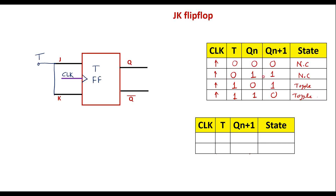This truth table can also be represented in short form considering the positive edges of the clock. When T is 0, Qn+1 is the same as Qn — no change. When T is 1, in both cases, Qn+1 is the complement of Qn, that is Q bar — which is toggle. So when T equals 1, the flip-flop keeps toggling, which is why it is called the toggle flip-flop or T flip-flop.